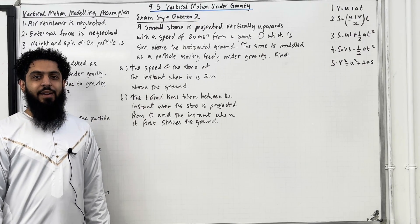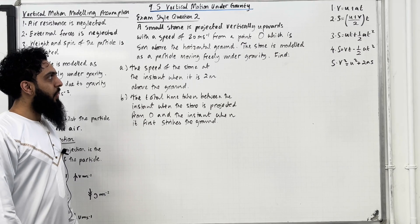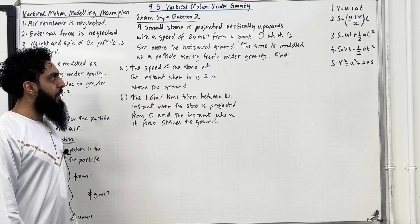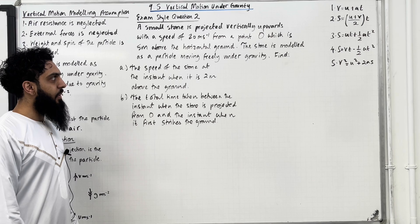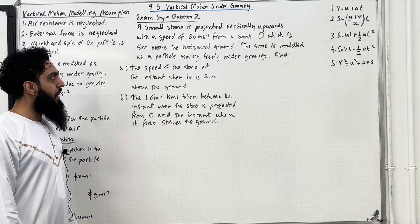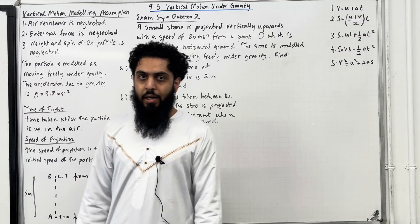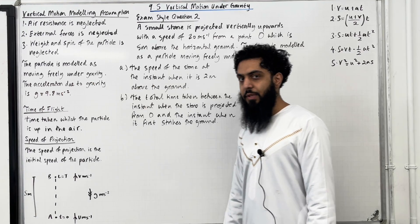Let's have a look at exam style question 2. A small stone is projected vertically upwards with a speed of 20 metres per second from a point O, which is 5 metres above the horizontal ground. The stone is modelled as a particle moving freely under gravity. Let's start by drawing a diagram to model this particular problem.